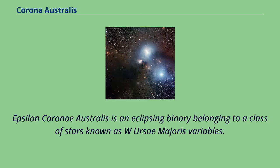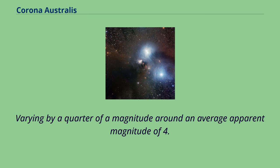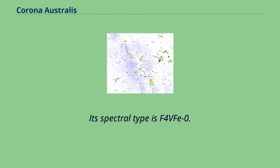Epsilon Coroni Australis is an eclipsing binary belonging to a class of stars known as W Ursae Majoris variables. These star systems are known as contact binaries as the component stars are so close together they touch. Varying by a quarter of a magnitude around an average apparent magnitude of 4.83 every 7 hours, the star system lies 98 light-years away. Its spectral type is F4V+.